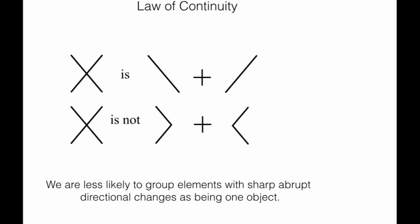Moving on to the next law, law of continuity. Law of continuity tells us that we perceive an object to be made up of continuous objects. Any point we see that the continuity is breaking, we don't consider that. Here we see that the cross is made of two slashes instead of a greater than and a less than sign.